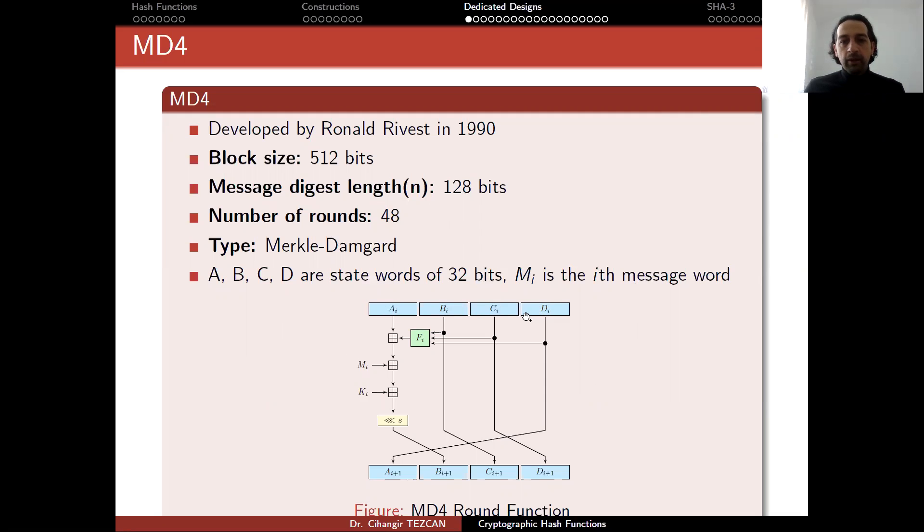So you have state words of 32 bits A, B, C, D, E. And Mi is the ith message word. So actually you have message blocks of 512 bits, but you are adding message words from here. So you divide them into 32-bit words. So you will have 16 Mi's here. So this square addition symbol is modular addition of 32 bits. So it's just normal addition, but you won't have a carry bit after the addition of 32 bits. So this is not an XOR, but a modular addition.